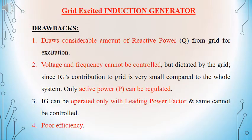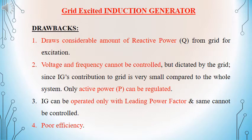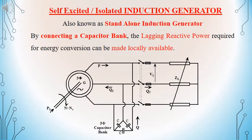The disadvantages in the case of grid connected or grid excited or separately excited induction generator are: it will be drawing a large amount of reactive power from the grid. The magnitude of the voltage as well as the frequency of the EMF that is supplied cannot be controlled by the system, but it is controlled by the grid itself. Only the active power that is supplied can be regulated by the induction generator. The induction generator will always be operating at a leading power factor, and the power factor cannot be controlled by the system. The efficiency of the system will be poor.